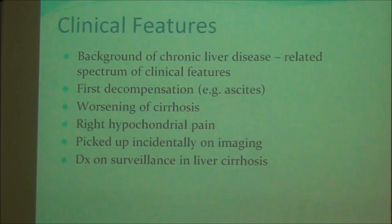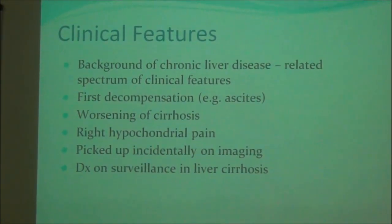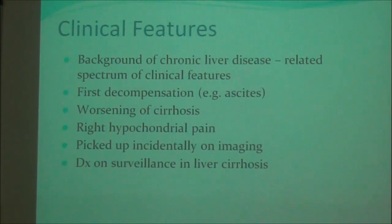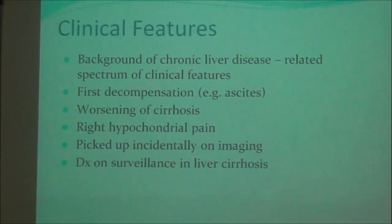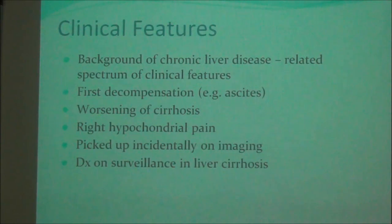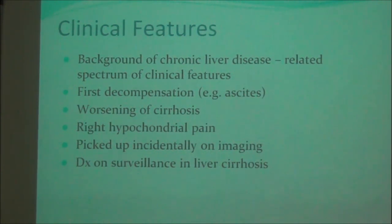Regarding clinical features, in most cases the patient has a background of chronic liver disease — pre-cirrhotic or cirrhotic — and accordingly the features will vary from minimal to a full-blown picture. Patients can also present as the first decompensation of a previously unknown chronic liver disease or cirrhosis. Cirrhosis remains compensated for a long period of time until the patient develops hepatocellular carcinoma, which then triggers decompensation.